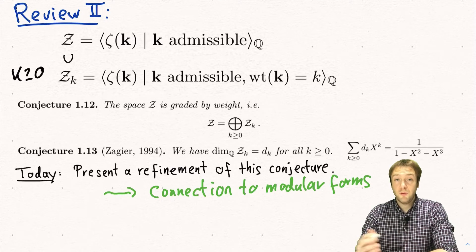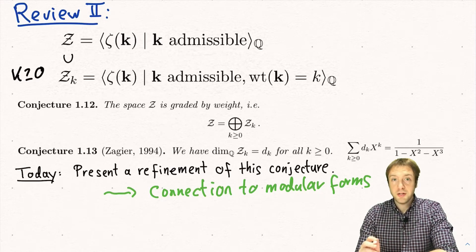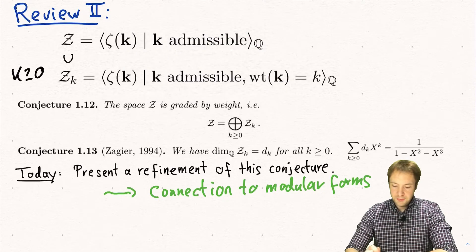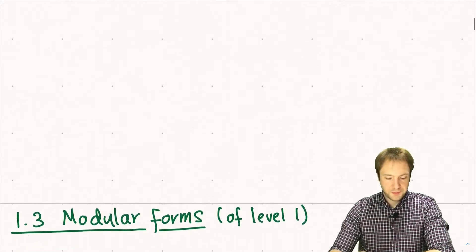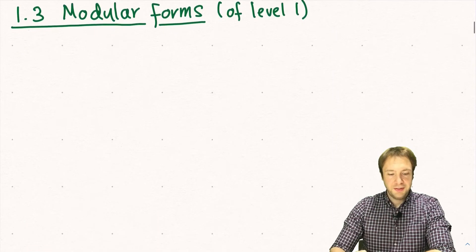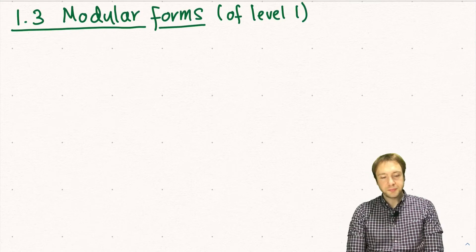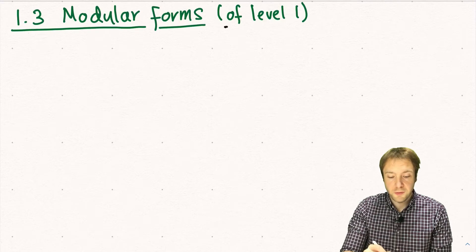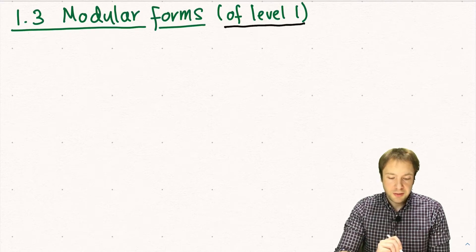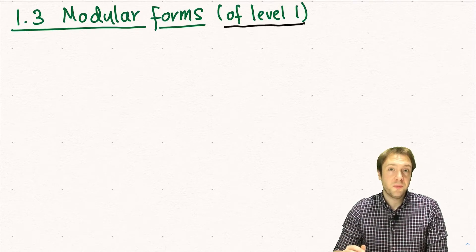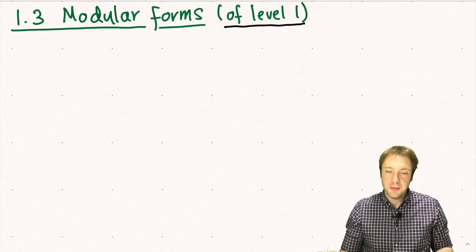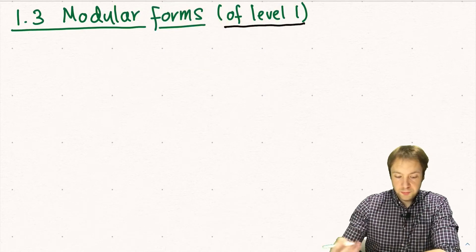Before we can state this conjecture we will do a crash course in the theory of modular forms. In this course, when we talk about modular forms, what we always mean are so-called modular forms of level 1. There is a more general notion of modular forms, but in this course we will just consider modular forms of level 1.